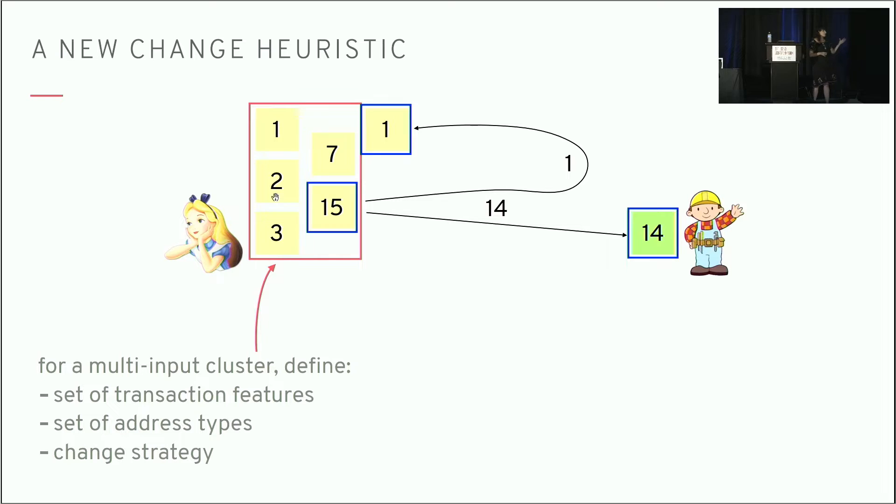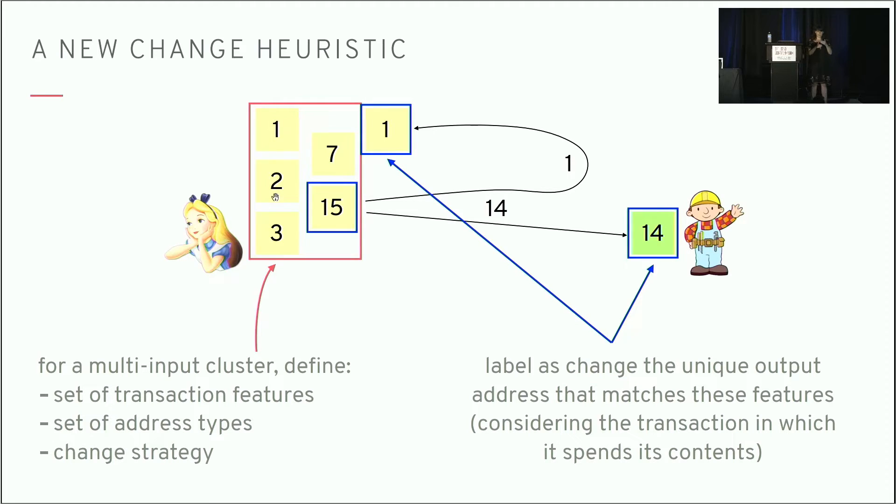Here's our heuristic in a nutshell. What we do is we first form these multi-input clusters, so we collapse all these addresses and transactions down and say they all belong to the same entity. Now we're going to use these features to characterize the expected behavior of this cluster, of this entity. We go through all the transactions in this cluster and add them to a set of features. We do the same thing with the address types—we go through the addresses in the cluster and identify the different types that are available. Then we can assign a single change strategy to the entire cluster according to its transactions. Now we've defined the expected behavior of the cluster. When we see an address from this cluster initiate a new transaction, what we're going to do is look at the outputs in that transaction and say which of these outputs matches the expected behavior of the cluster.